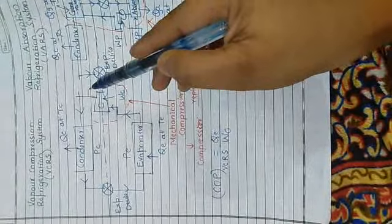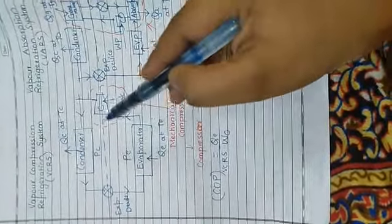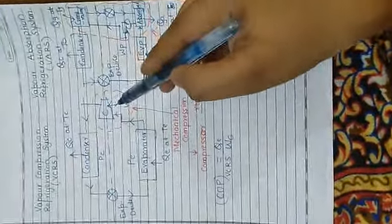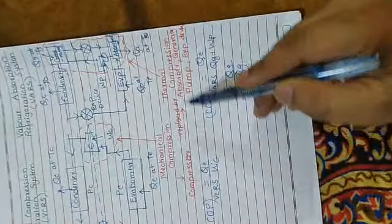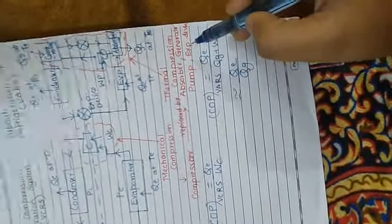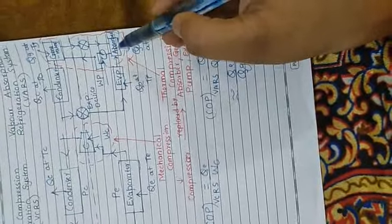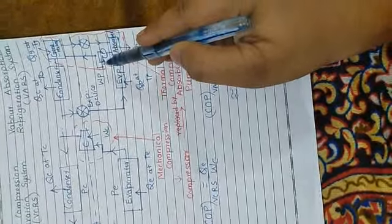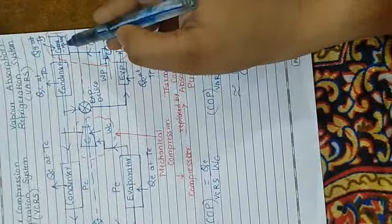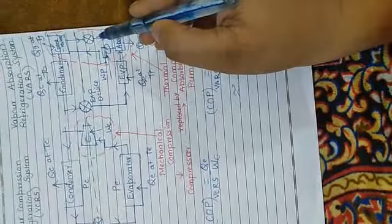Except this compressor. Here vapor is compressed. This compressor is replaced by absorber, generator, pump and expansion device. So we have these elements: absorber, pump, generator and expansion device.